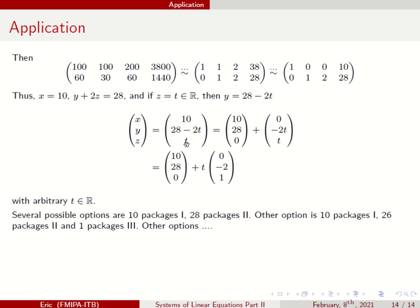You can substitute T equals 0. So you have 28 packages of type 2 and 0 packages of type 3. Another possible option is you have T equals 1 maybe. 28 minus 2, that is 26, and 1 package of the third type.